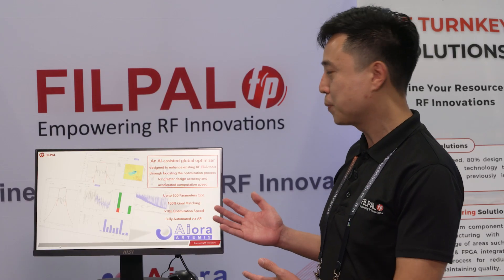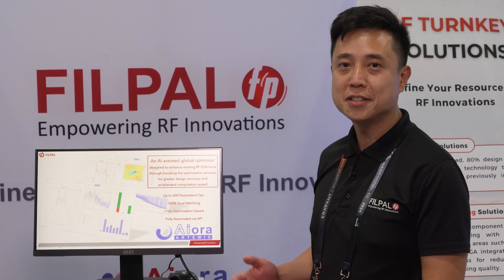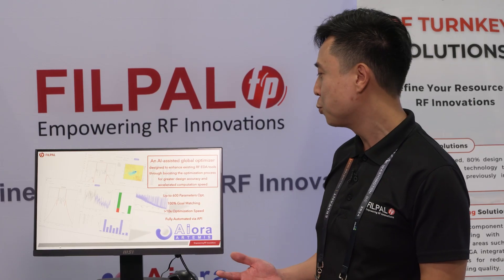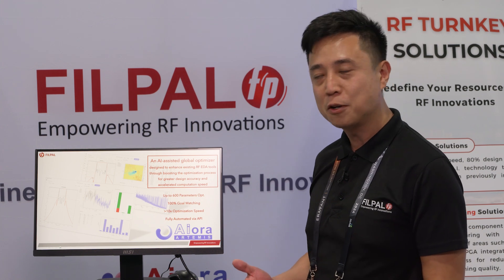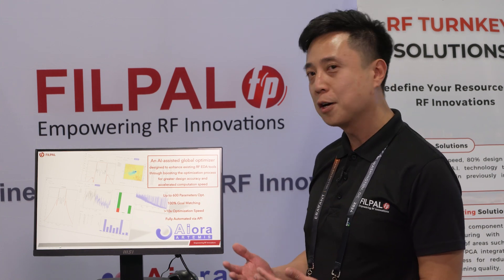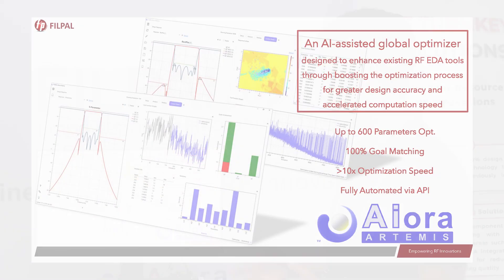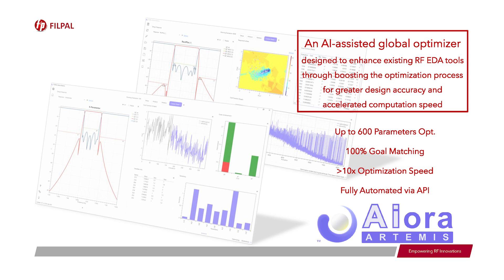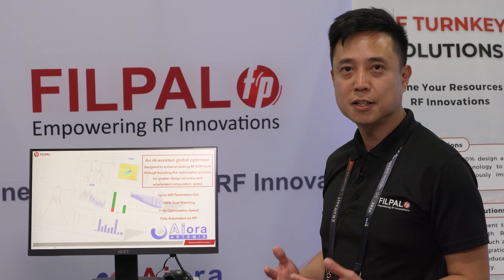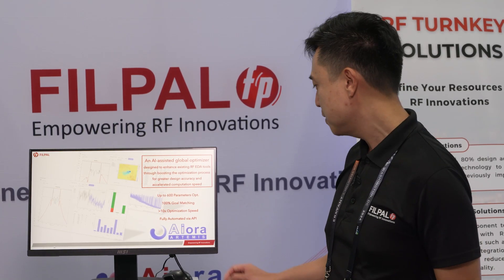Iora is a global optimizer designed to enhance existing EDA tools for greater design accuracy and computation speed acceleration. It's able to optimize up to 600 parameters with 100% goal matching. We can speed up the optimization time by at least 10 times, and it's fully automated through the API provided by Keysight.